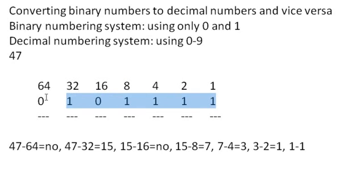We're going to ignore the zero there. So it's going to be 1, 0, 1, 1, 1, 1 is 47 in binary. Okay, now I'm going to show you how to convert a binary number to decimal format.